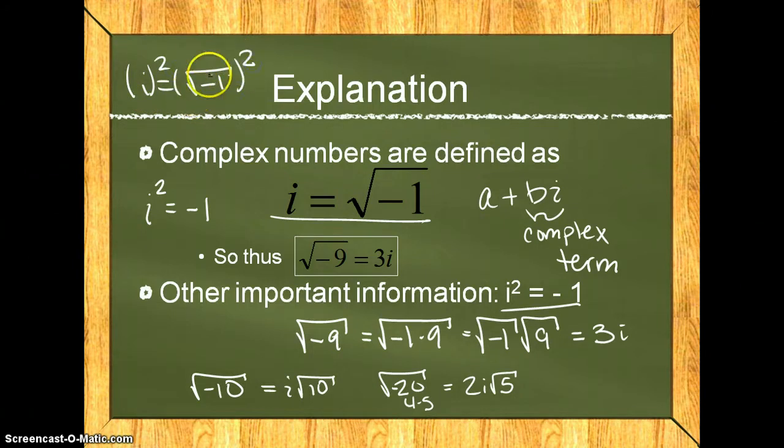the square of a square root takes away both. They are opposite operations and therefore cancel each other out, and so i squared equals negative 1.